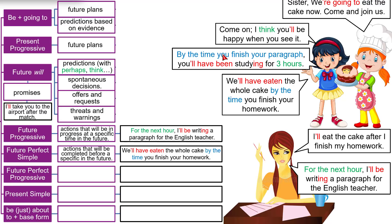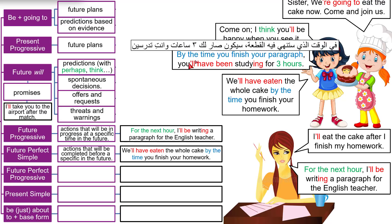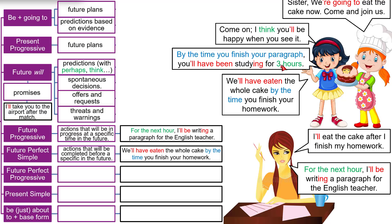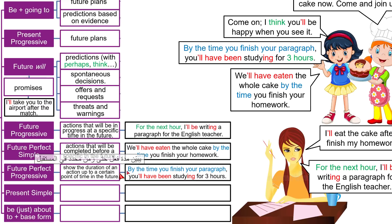"By the time you finish your paragraph, you'll have been studying for three long hours." This is the future perfect progressive. The duration is important — this studying will have been happening for a long time. Use 'will have been' and add '-ing' to the verb.